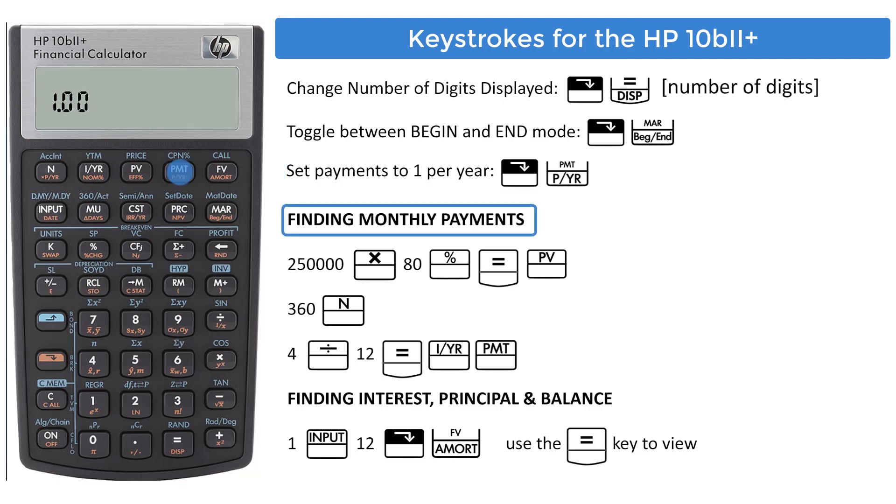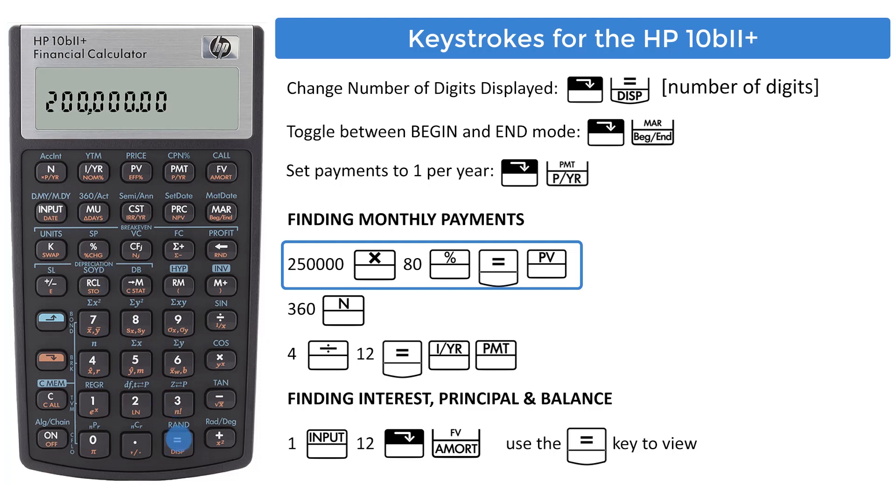Part 1 of the question is finding monthly payments. Enter 250,000, multiply by 80, percent key, and equals. Enter this number into the present value register. The number of payments is 360, which is 12 months for 30 years. This is entered into the number of payments register.